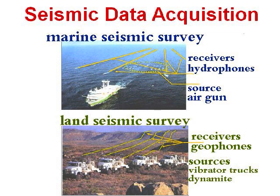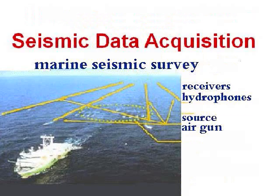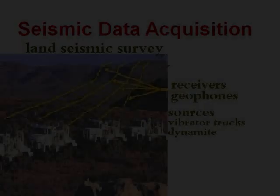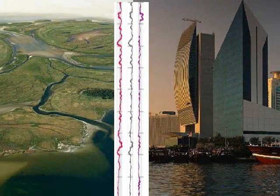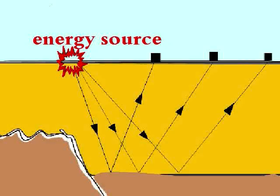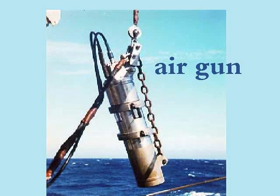Let's look at the equipment used to first create seismic waves and then to record them. There are several types of equipment used to generate and record seismic waves, depending on the surface and subsurface location, composition, and conditions. We'll begin with the equipment called the energy source, which is used to create a sound wave. There are three types of sources.